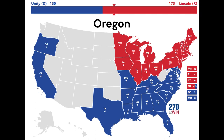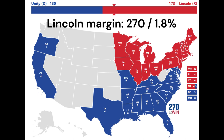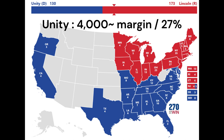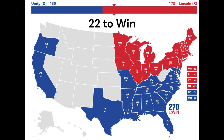The other west coast state, Oregon, with its three electoral votes would similarly flip in this scenario. In this case, it would be Breckinridge that was closest to defeating Lincoln, only being edged out by 270 votes. However, with the unity ticket, Lincoln would have lost by just over 4,000 votes, or 27%. That places the electoral count at 130, short by 22.